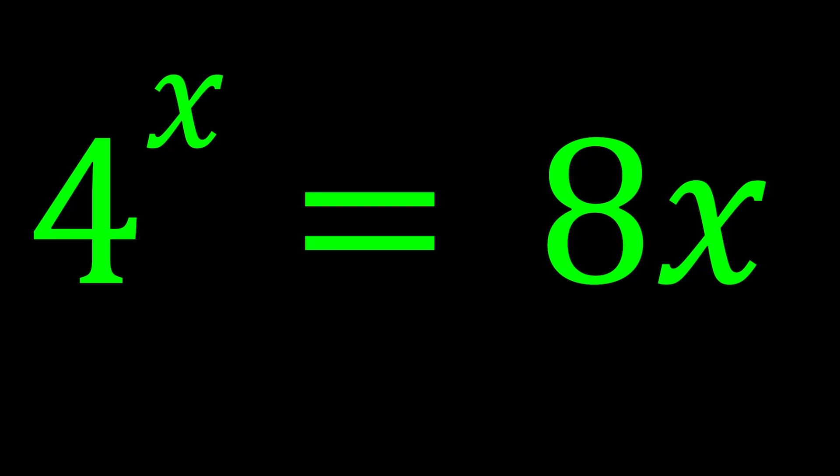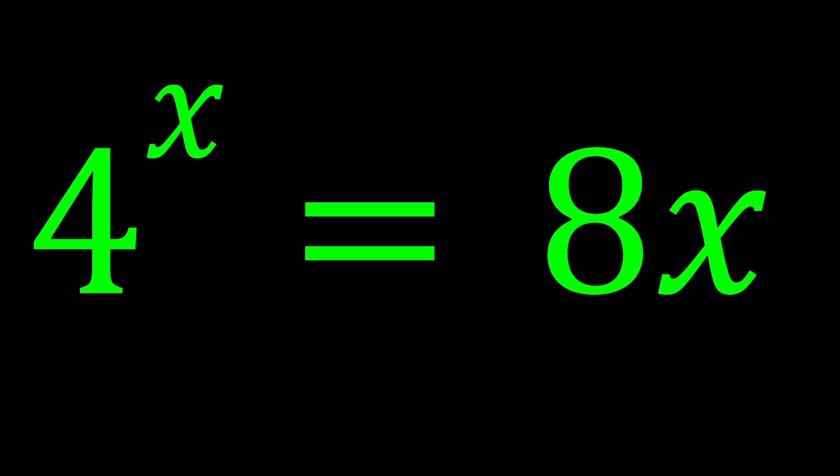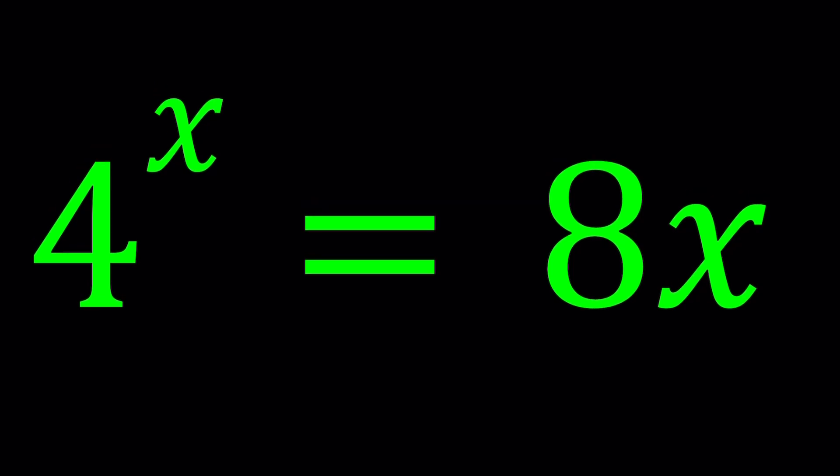Now I call this non-standard because we have an exponential function on the left and a linear function on the right. We're also going to be taking a look at the graph and some results from Wolfram Alpha.